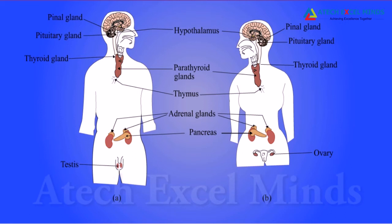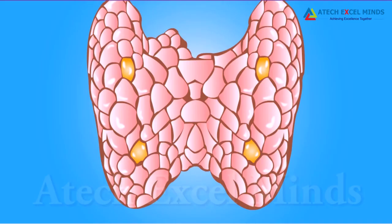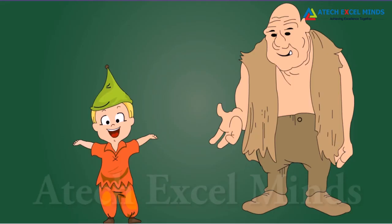Other endocrine glands include the thyroid gland, pancreas, and adrenal glands. The thyroid gland produces thyroxine hormone, and iodine is essential for the synthesis of thyroxine. Deficiency of iodine causes goiter. Growth hormone is one of the hormones secreted by the pituitary gland — less secretion causes a person to be very short, and high secretion causes the person to be very tall.